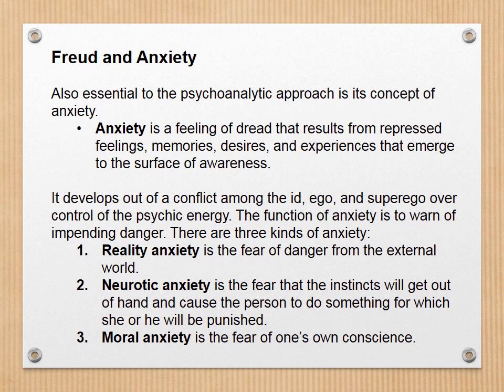The function of anxiety is to warn of impending danger, and there are three kinds. Reality anxiety is the fear of danger from the external world — for example, walking down the street and seeing someone coming toward you carrying a very large knife. Neurotic anxiety is the fear that the instincts will get out of hand and cause the person to do something for which she or he will be punished. Moral anxiety is the fear of one's own conscience, meaning you're anxious that you are violating your moral code.